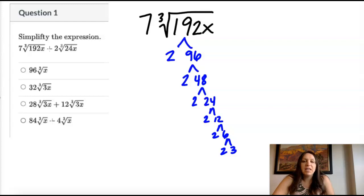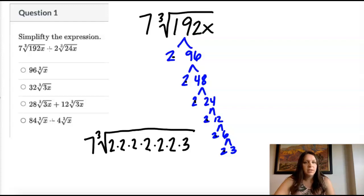If I rewrite that, I'm going to rewrite this as seven cube root. And I have one, two, three, four, five, six twos. And a three. So if I multiply all that out, I'm going to get 192. And then I still have an x under there.